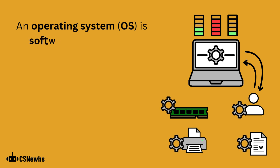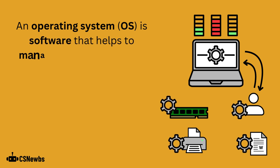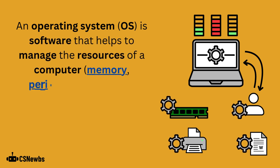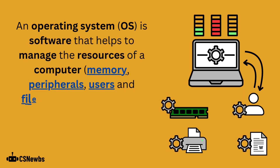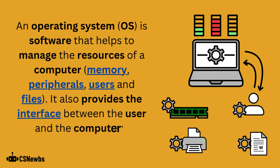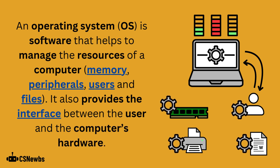An operating system is software that helps to manage the resources of a computer, especially managing memory, peripherals, users and files. It also provides the interface between the user and the computer's hardware.